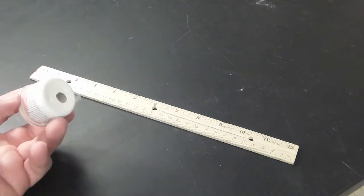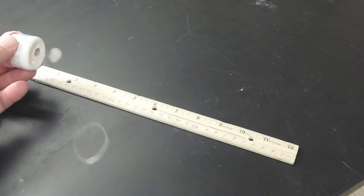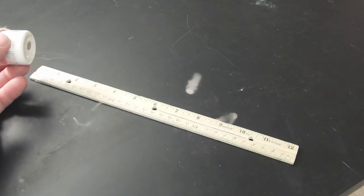All right it's time to go smaller. Now we're going to drop down to a half inch in diameter. The ruler is going to give us a better feel for just how small these are.